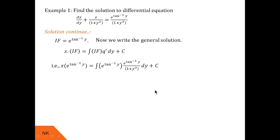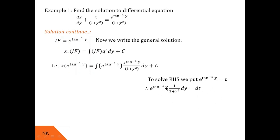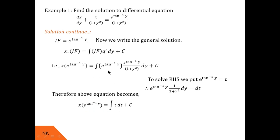To solve this integral, we use the substitution t = e^(tan⁻¹y). Differentiating both sides, we get e^(tan⁻¹y) × 1/(1 + y²) dy = dt. So the term e^(tan⁻¹y) / (1 + y²) dy equals dt, and after substitution the right-hand side integral becomes ∫t dt + c.